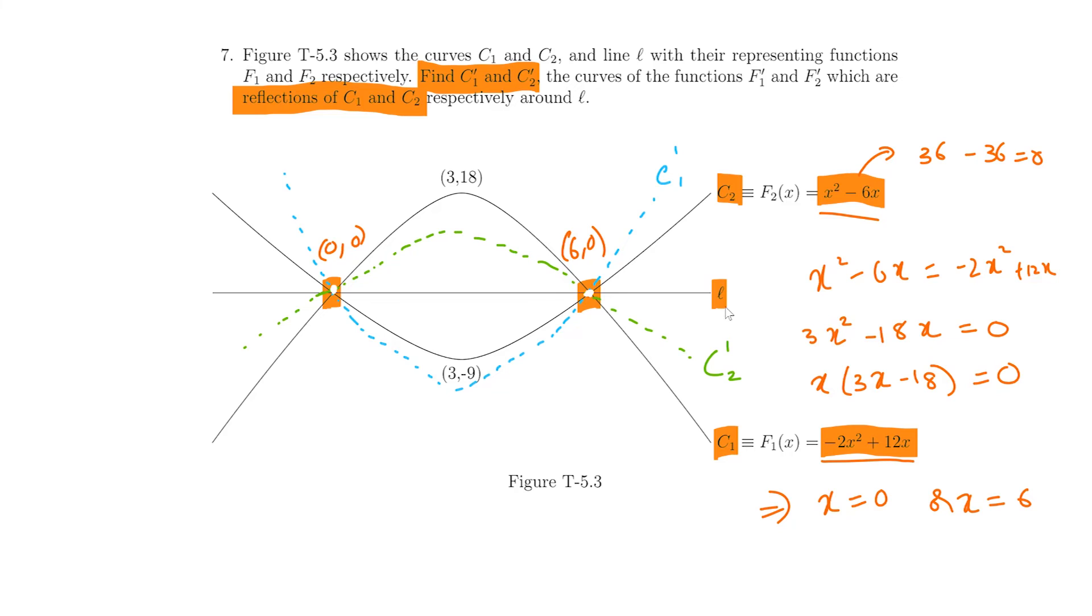So, essentially this is the horizontal line which is y is equal to 0. L is y is equal to 0.